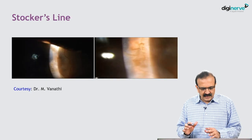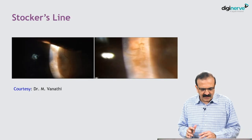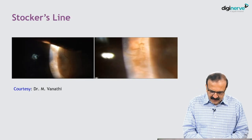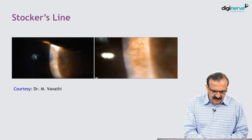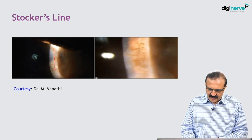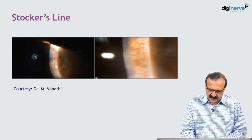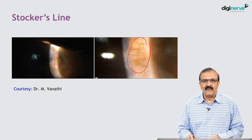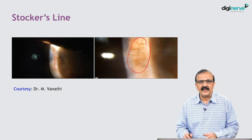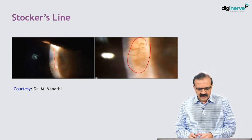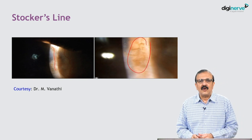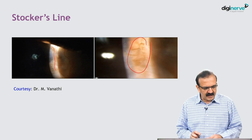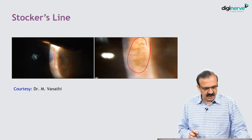Let us see it in increased magnification. In higher magnification, you can see this pigmented part very clearly — typical of Stocker's line in a case of pterygium.